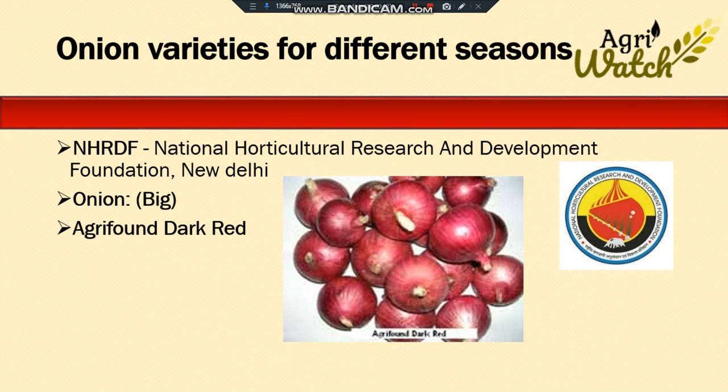National Horticulture Research and Development Foundation, New Delhi, has developed 14 and 17 lines and varieties of onion and garlic for different agroclimatic zones and seasons. Out of these, 6 varieties of onion and 10 varieties of garlic were notified.